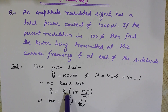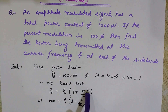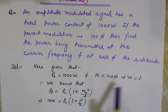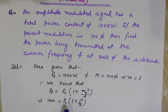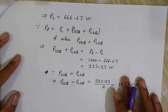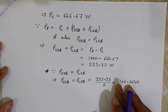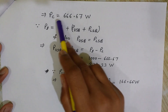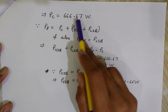Substituting the values: 1000 = PC × (1 + 1²/2) = PC × (1.5). Solving for PC, we get the carrier power PC = 666.67 watts.